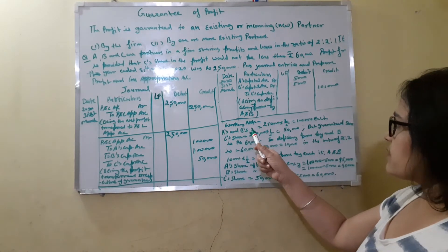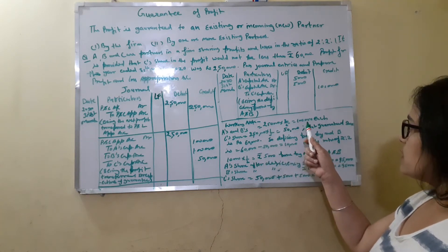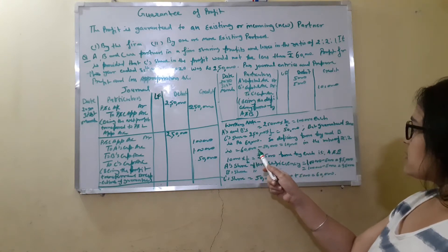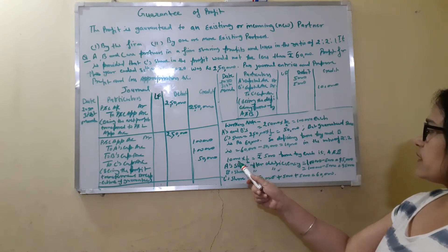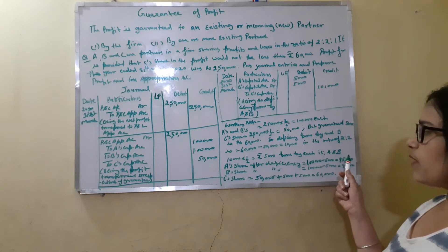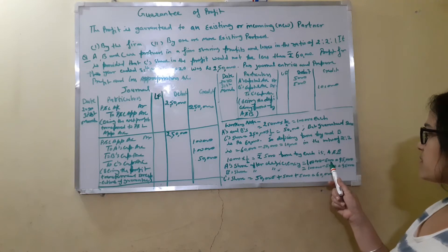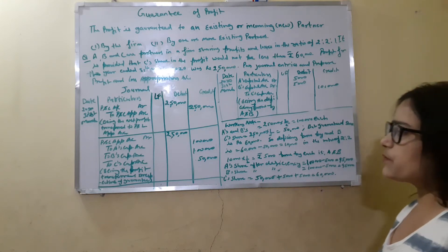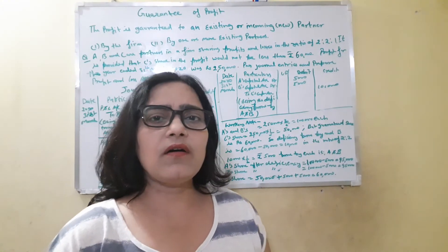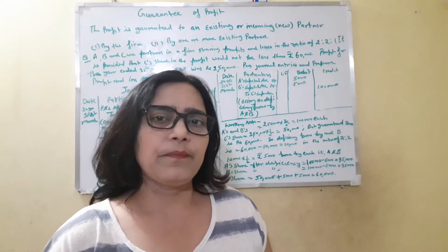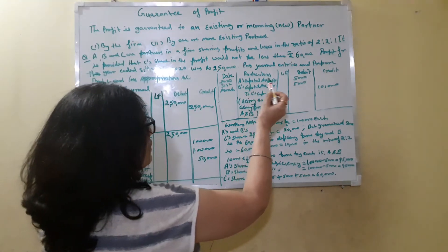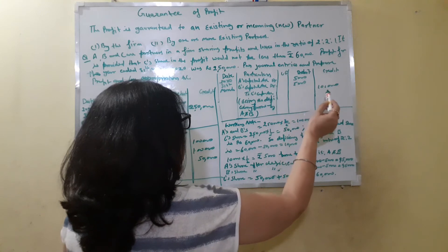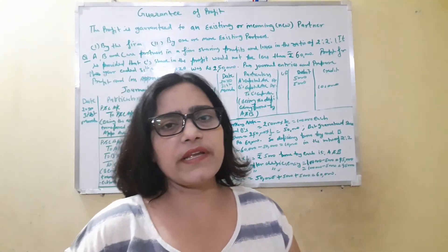As a working note: A and B's share as per profit sharing ratio is ₹1,00,000 each. C's share is ₹50,000, but the guaranteed share is ₹60,000. So the deficiency borne by A and B is ₹60,000 minus ₹50,000 = ₹10,000, divided in the ratio of 2:2, which is ₹5,000 each. After the deficiency adjustment, A and B's share will be ₹1,00,000 minus ₹5,000 = ₹95,000 each, and C's share will be ₹50,000 plus ₹10,000 = ₹60,000. The journal entry is: A's Capital Account debit ₹5,000, B's Capital Account debit ₹5,000, to C's Capital Account ₹10,000 — being the deficiency borne by A and B in the ratio of 1:1.